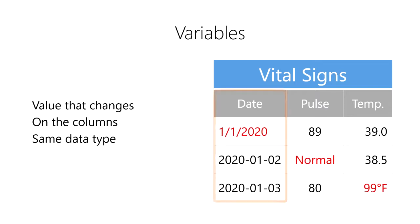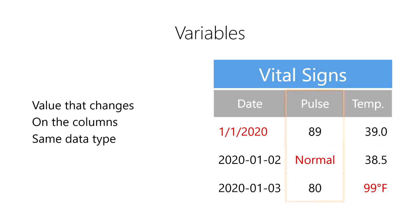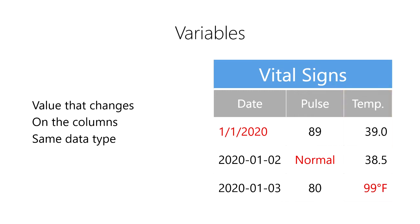For example, we don't want our dates to be stored using different date formats. We don't want our heart rate data to be stored using two different data types. And we don't want our temperature to use both Celsius and Fahrenheit units of measure. Instead, we want all of our data in the column to use the same data type, same scale, and same unit of measure.